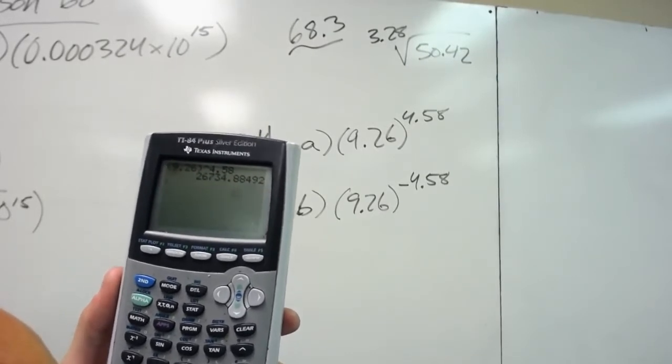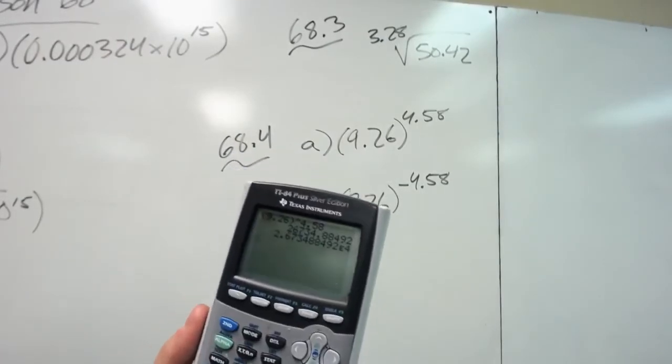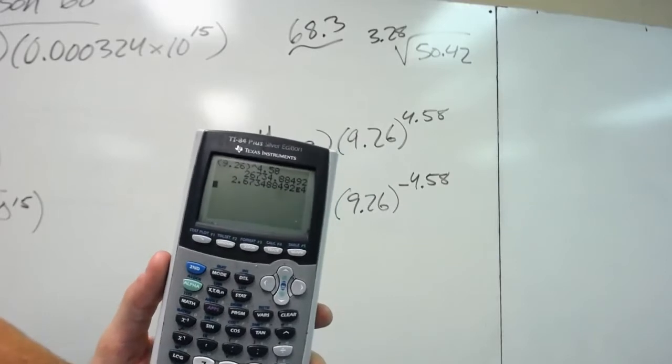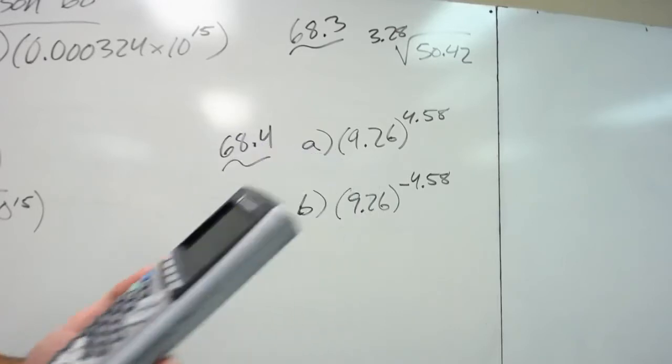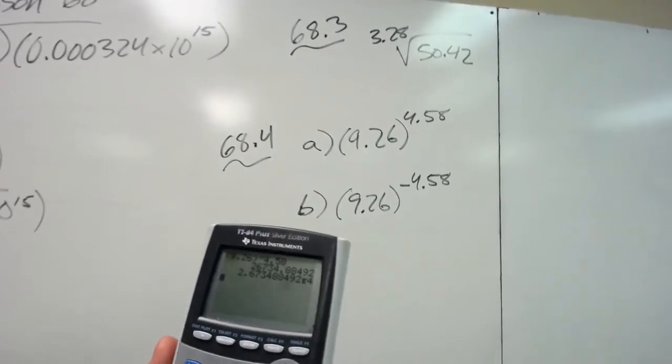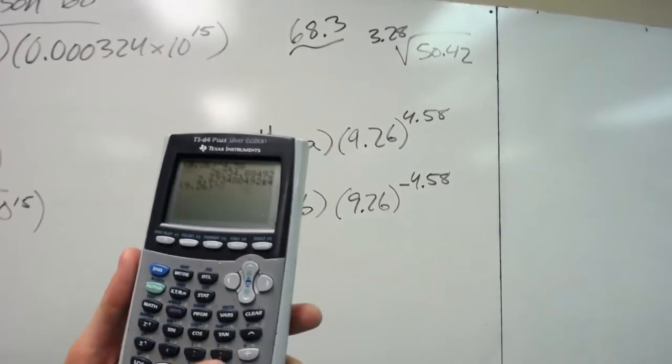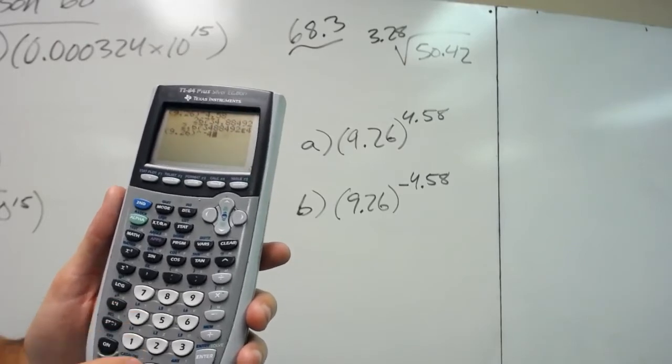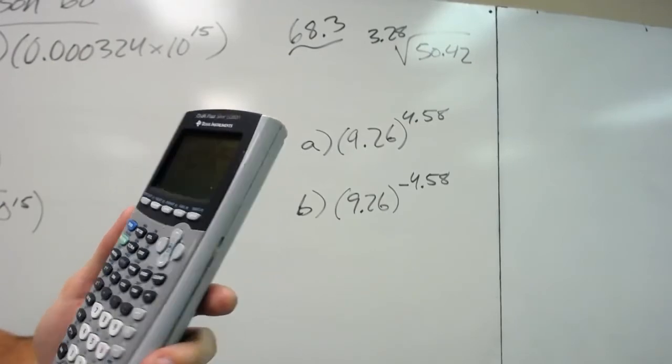Okay. And if I want to put it in scientific mode, hit enter. 2.67, all that stuff. The book gives it as 26,734, but it's all the same. And then I can do the same thing for the negative one, for B. Open parentheses, 9.26, close parentheses. Give the caret to the, make sure you do the negative sign, not subtraction. Negative 4.58. Hit enter. 3.74 to the negative fifth power.